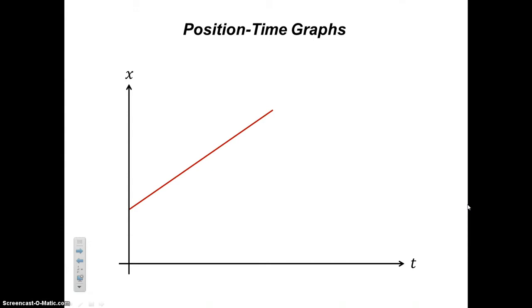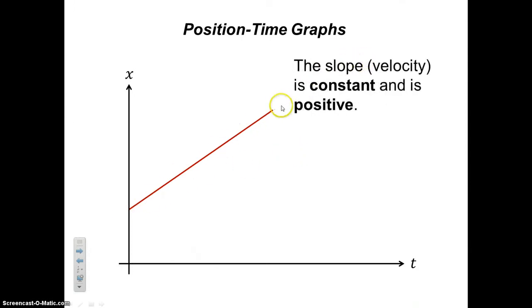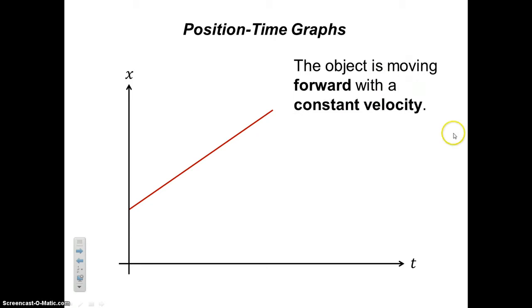What about a different position-time graph — something like this? The slope is constant because this is a straight line, and the slope is positive because it's going up. So we have a constant positive velocity. If the velocity is positive, that means the object is moving forward, with constant velocity.